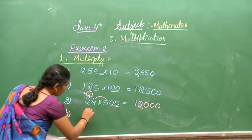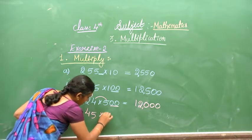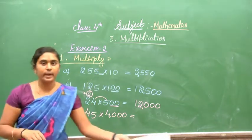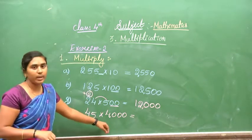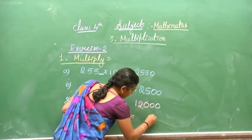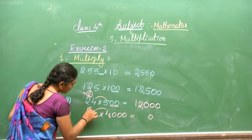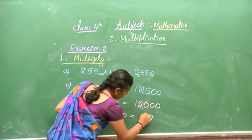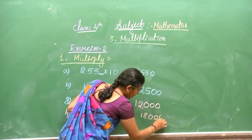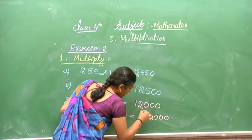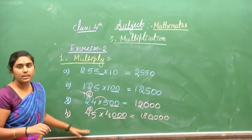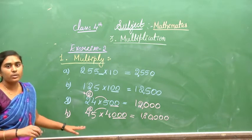The last one: 25 multiplied by 4,000. As I said, always multiply the single-digit part first. 4 times 5 is 20, write 0 carry 2. 4 times 2 is 8, plus 2 is 10 — that gives 100. Then append three zeros. The answer is 1,00,000 — wait — it is 1,08,000. The answer is 1,08,000.